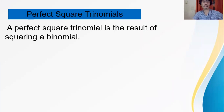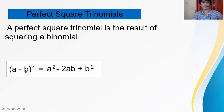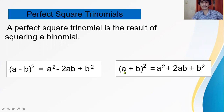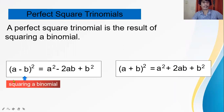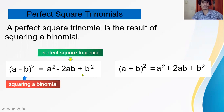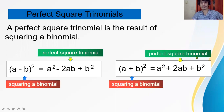A perfect squared trinomial is the result of squaring a binomial. We have (a minus b) squared equals a squared minus 2ab plus b squared. And (a plus b) squared equals a squared plus 2ab plus b squared. This is squaring a binomial, and this is the perfect squared trinomial.